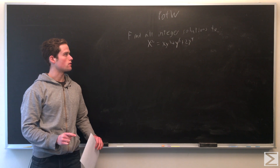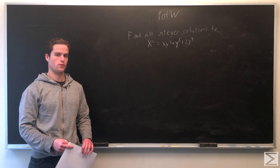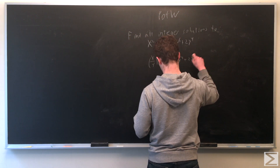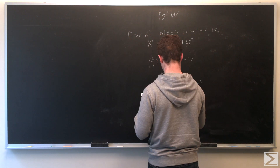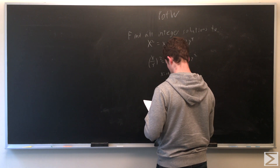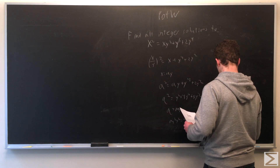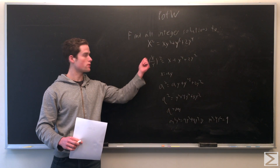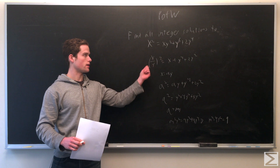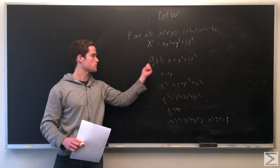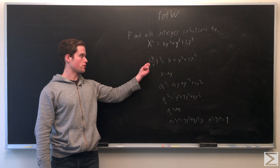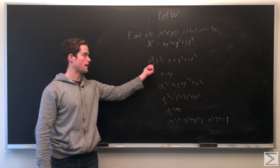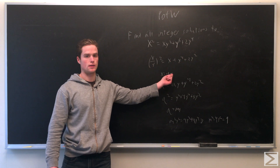First, we're going to assume that y is not zero. If it was zero, we just get x equals zero. We're going to divide by y squared. So dividing by y squared, we get x over y squared equals some integer, meaning x over y is some rational number. If that were not an integer, its square would also not be an integer — so this has to be an integer. Therefore, x equals some integer times y.